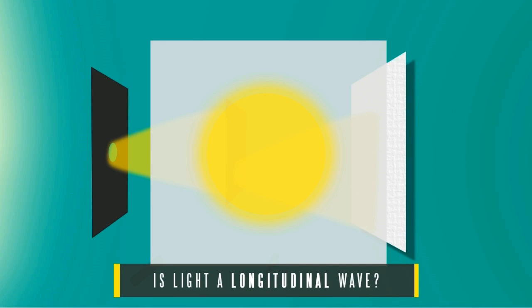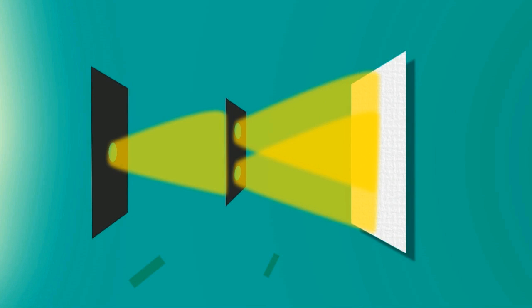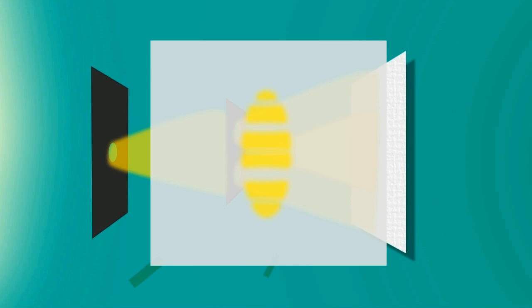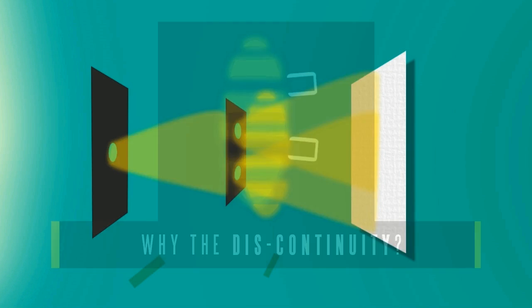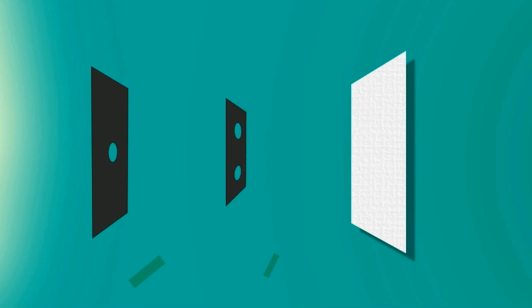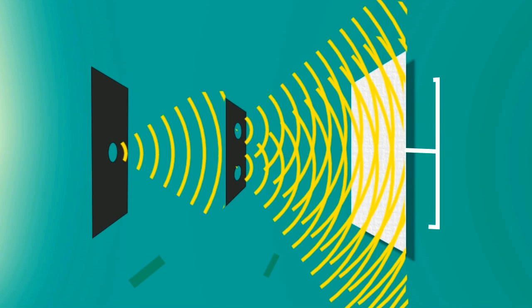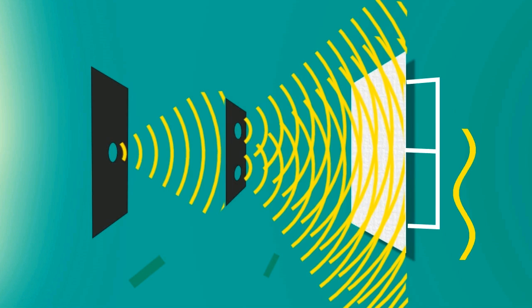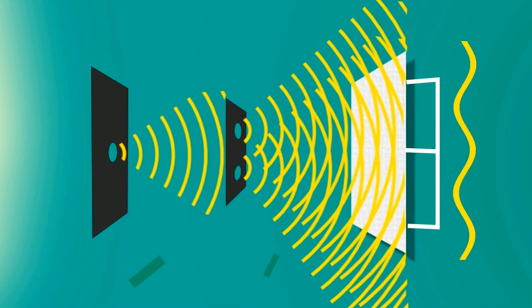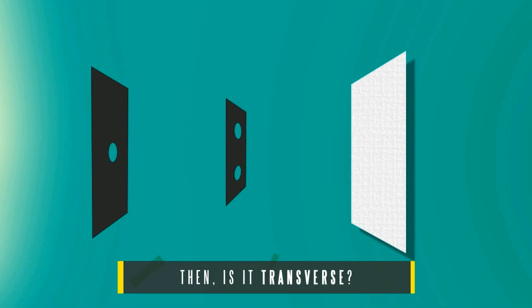Does that mean light is a longitudinal wave? When he beamed light with both of the slits opened, we found this on the plate. Why do we see this discontinuity in the pattern? If we take our first case and use its conclusion as a base, we will find that the two waves from the two slits interfered to form this pattern. So, does that mean light is a transverse wave?